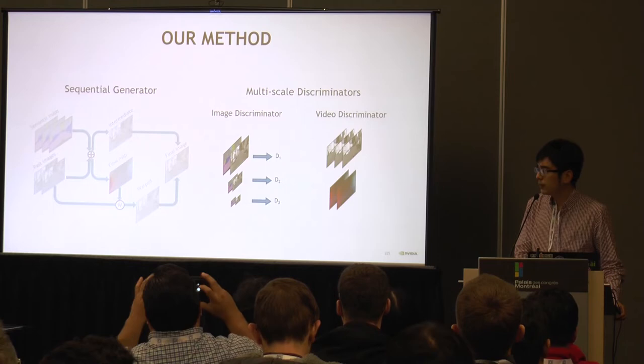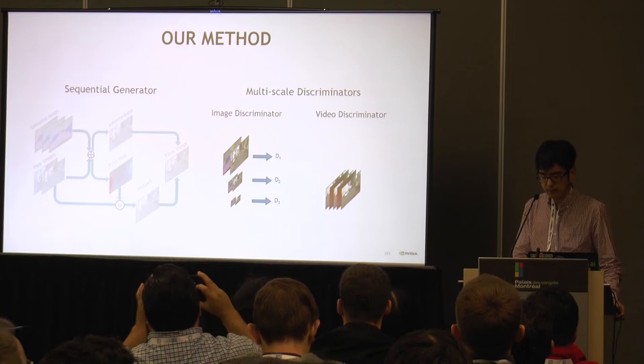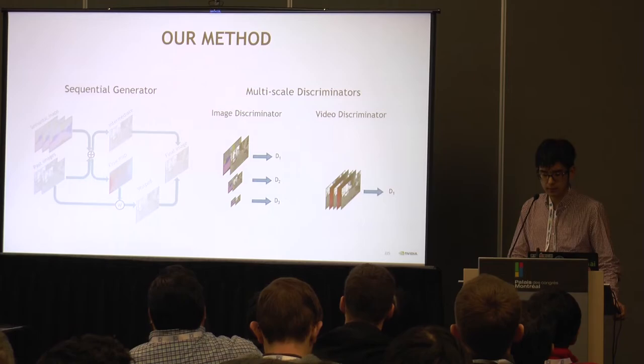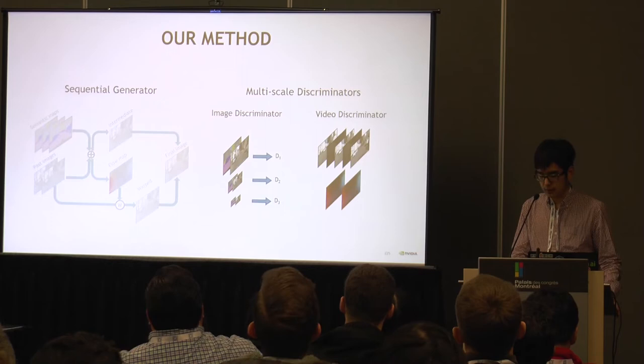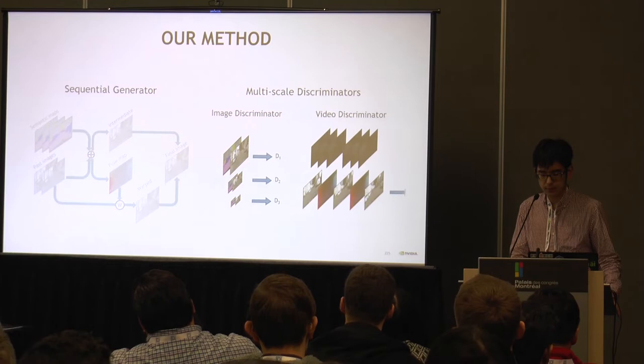For the video discriminator, we take neighboring frames in the video and concatenate them with the flow maps to feed into the discriminator to determine whether it's real or fake. To ensure long-term temporal consistency, we also subsample the frames by different amounts and put them into the discriminator. So this can be seen as multi-scale in the temporal domain.